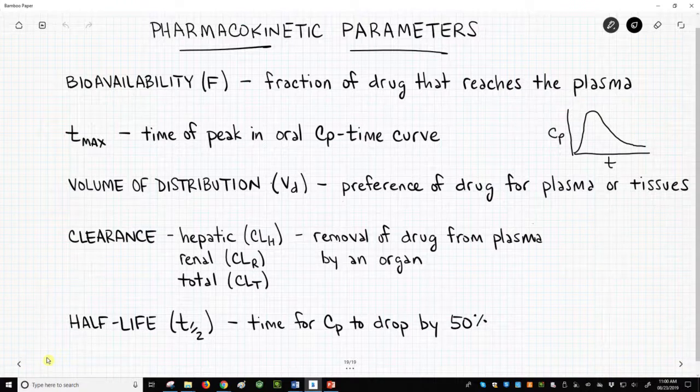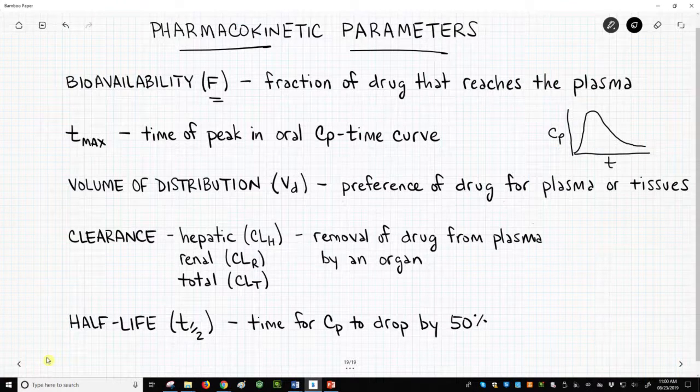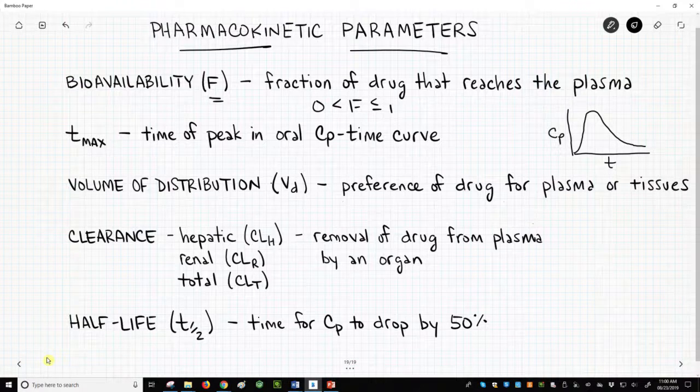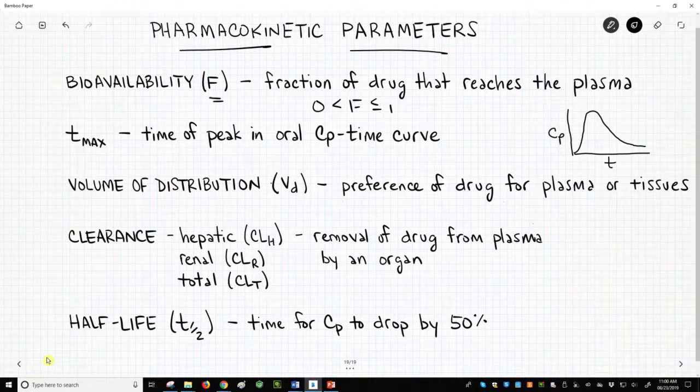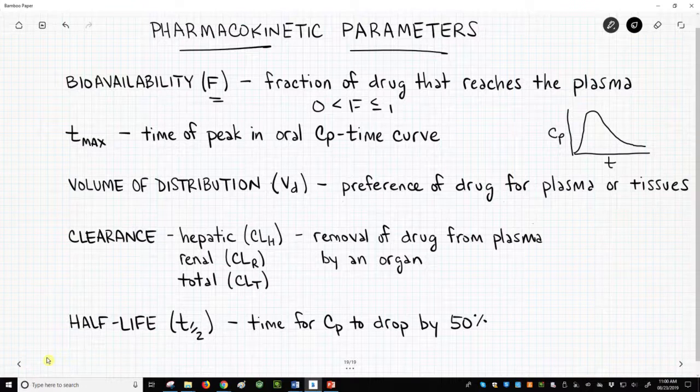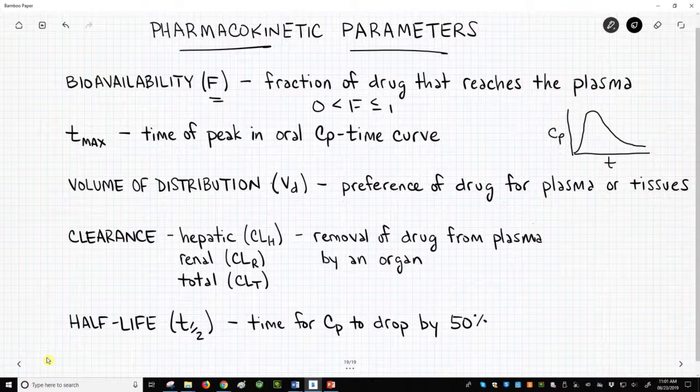Bioavailability is the fraction F of the original drug dose that actually reaches the plasma. It can range in value from 0, which is low, to 1, which is high. Higher is better. A drug with a bioavailability of less than around 0.2 is less predictable, which is another way to say less safe. Bioavailability is mostly driven by absorption and metabolism of a drug.